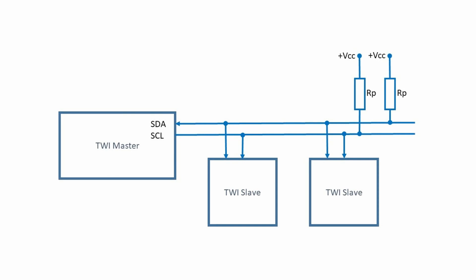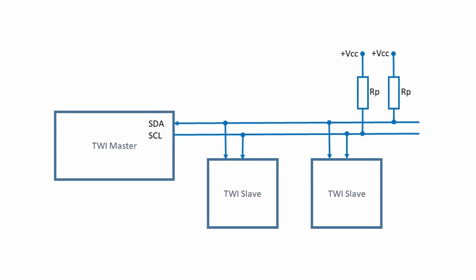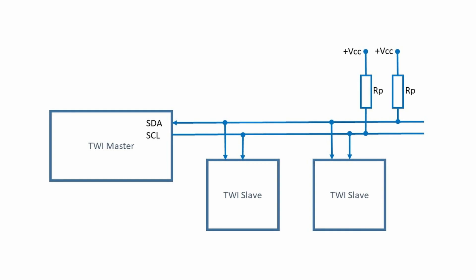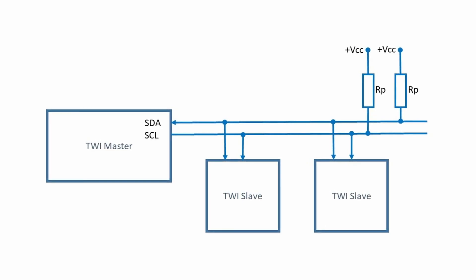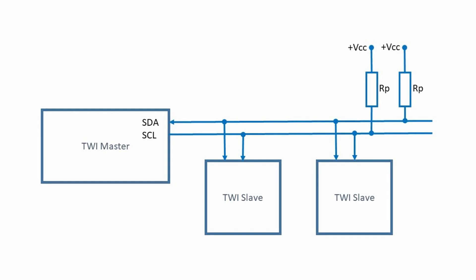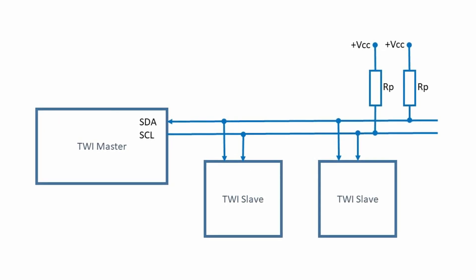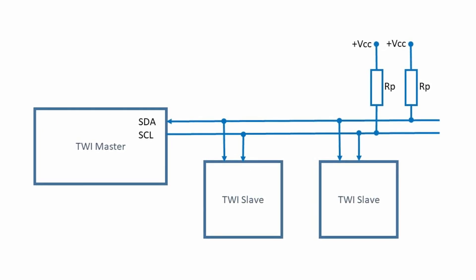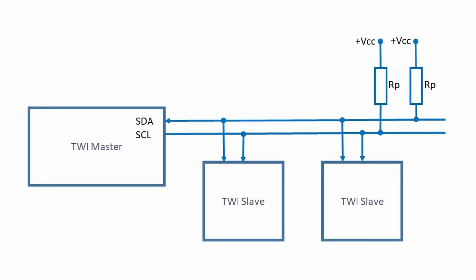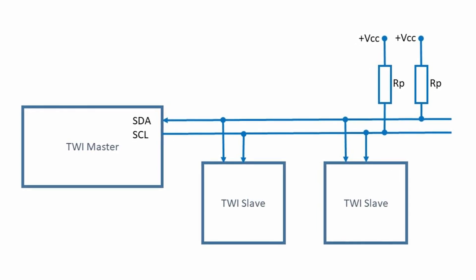At the output side of units, the lines have an open drain circuit. This means that external pull-up resistors are needed to ensure proper operation of the TWI bus. The value of these resistors depends on the number of connected elements, the speed of transmission, and the power supply voltage — usually assumed between 1 and 4.7 kOhms.